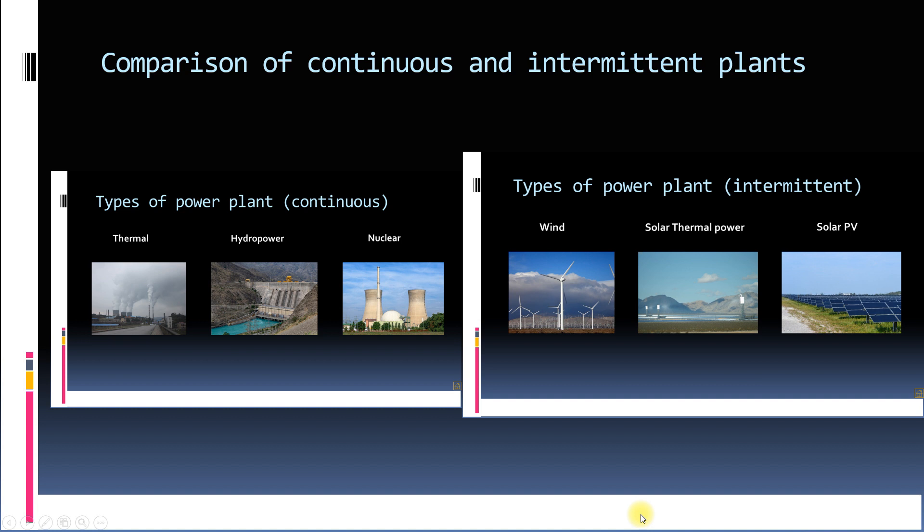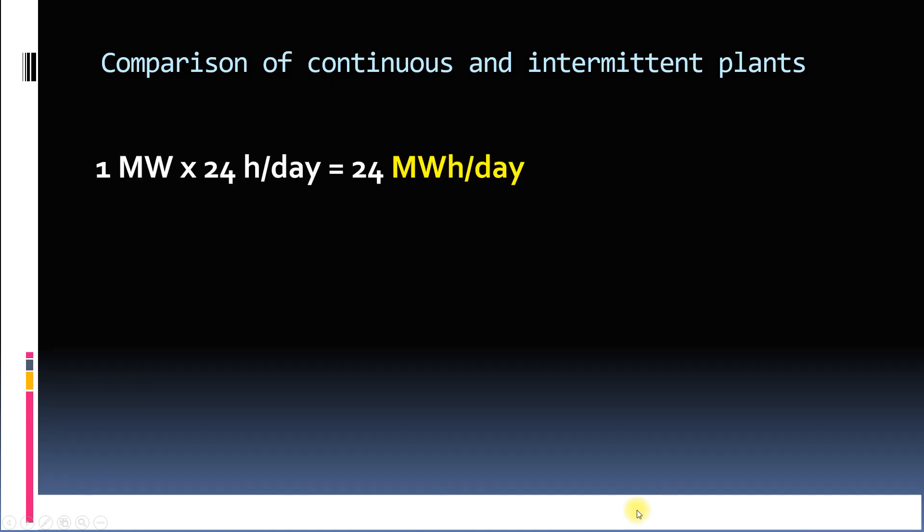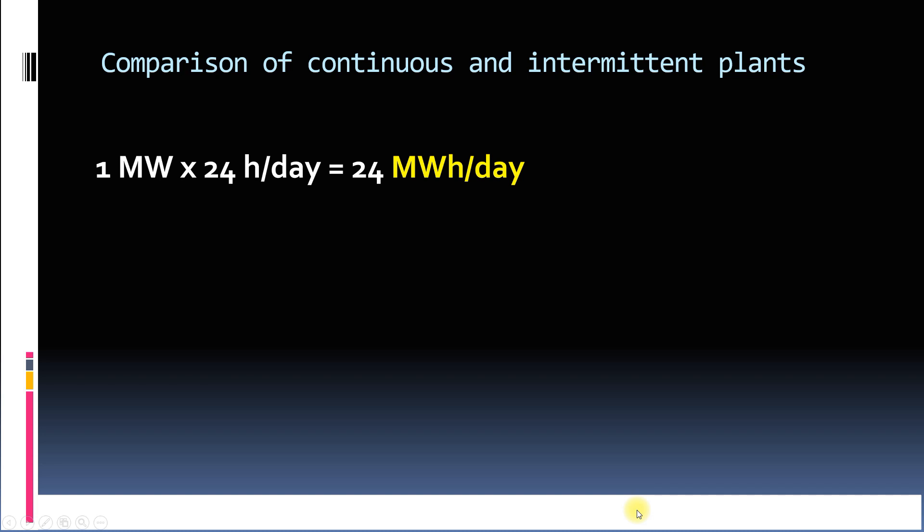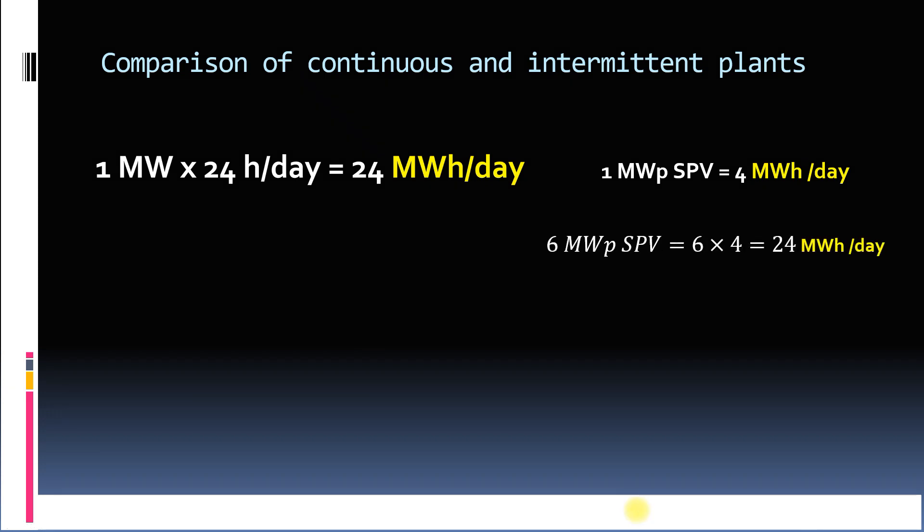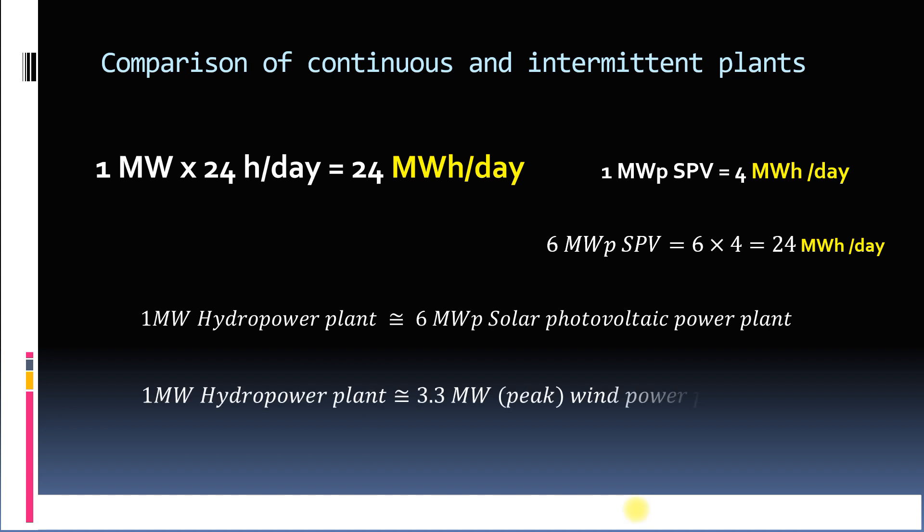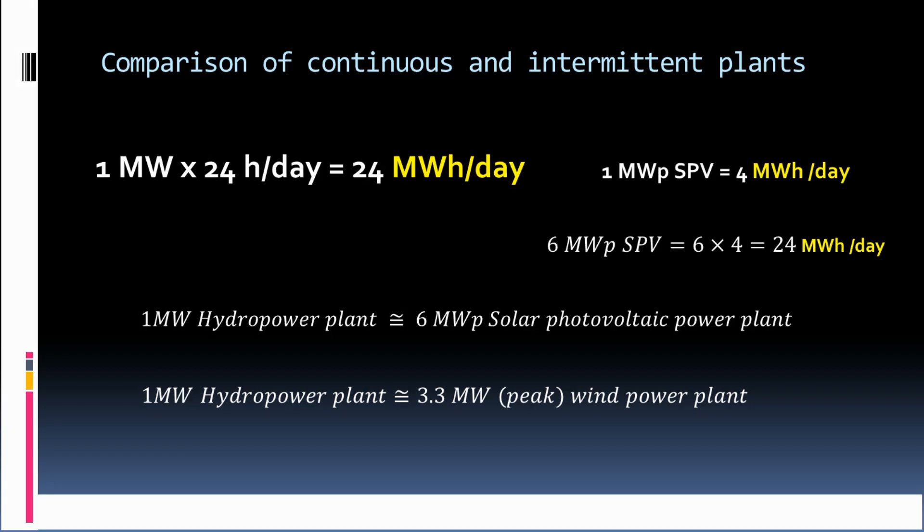Let's compare now continuous and intermittent power plants. We know that 1 megawatt continuous power plant will supply 24 megawatt hours of electricity in a day if it runs for 24 hours. Whereas, a 1 megawatt peak solar power plant in India will give around 4 megawatt hours per day. So, a 6 megawatt peak solar power plant will give around 24 megawatt hours of electricity per day. So, we can say on the basis of energy that 1 megawatt hydropower plant is equivalent to 6 megawatt peak solar photovoltaic power plant. A similar argument can be given that 1 megawatt hydropower plant is equivalent to 3.3 megawatt peak wind power plant on the yearly basis as it supplies energy only 30% of the time.